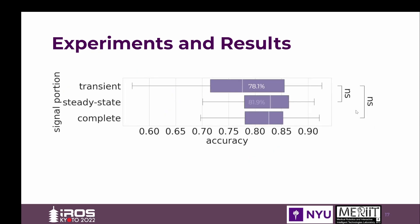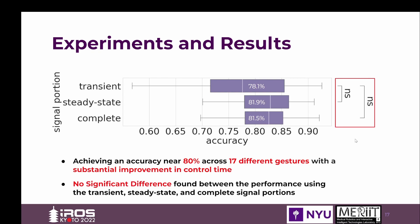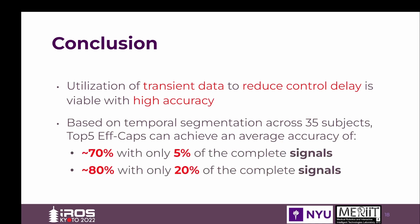To evaluate the efficacy of using transient signals, we observe the top five efficient CapsNet performance when training and testing on different signal portions. Using the two-sided Mann-Whitney-Wilcoxon test with Bonferroni correction for significance, we observe no significant difference between model performance using different signal portions. The use of the transient signal provides a substantial improvement in control time, while performance is not significantly different from that of the steady state or complete data. Overall, based on temporal segmentation across 35 subjects, the top five efficient CapsNet achieves nearly 70% predictive accuracy with only 5% of the complete signals, and 80% with only 20% of the complete signals.